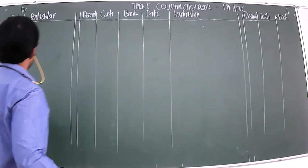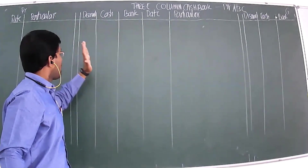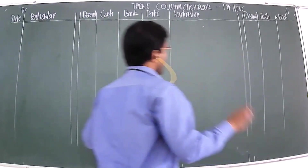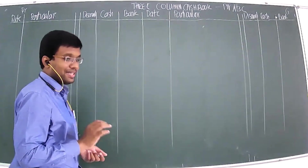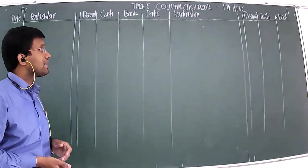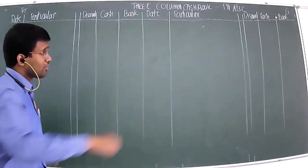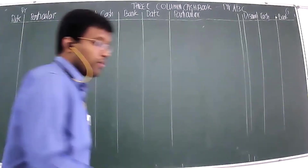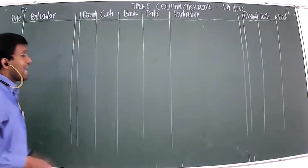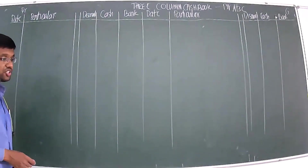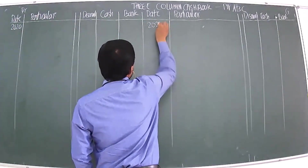Let's look at the three-column cash book format. We have a debit side and a credit side — both sides are symmetrical. We have discount, cash, and bank columns on each side. Due to space constraints, I have not shown the voucher number column and the ledger folio column, but remember we will also have columns for recording voucher numbers, receipt numbers, and ledger folio numbers.